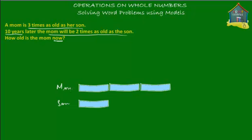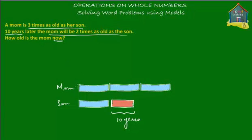So son is one block old and mom is three blocks old. The problem says that 10 years later, the mom will be two times as old as the son. So let's draw 10 years — this block here represents 10 years from now. Let's fill another color in this, so this is your 10 years. Ten years later, the mom also gets 10 years older, so we copy the same block for the mom.